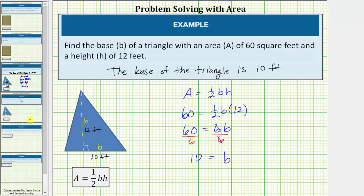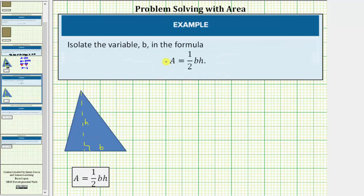Now let's look at a second related question. Here we're given the area formula for a triangle and asked to isolate or solve for the variable B. So beginning with the formula, let's first clear the fractions from the equation by multiplying both sides of the equation by 2. So multiply the right side by 2 and the left side by 2.